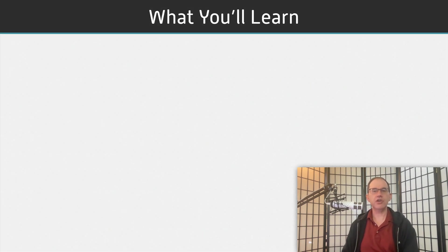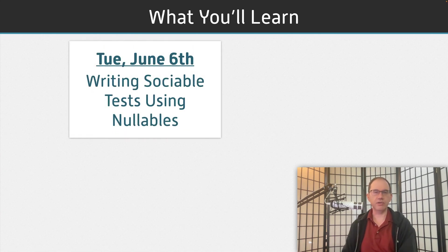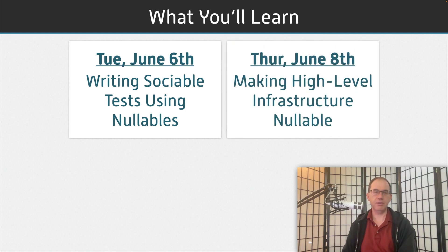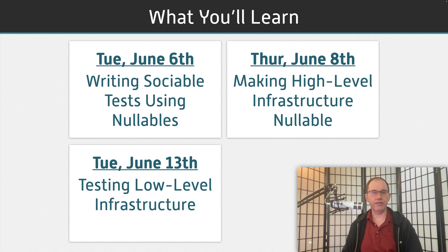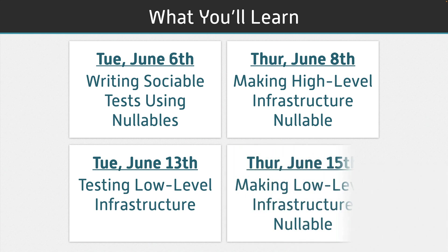In this course, you'll learn everything you need to know to start using these tests in your code. You'll learn how to use nullables as you test drive application-level code. You'll learn how to design and implement your own nullables as you write a high-level infrastructure wrapper for an external service. You'll learn how to write narrow integration tests as you implement a low-level HTTP infrastructure wrapper. And you'll learn how to make the low-level infrastructure wrappers nullable by using embedded stubs. Throughout it all, you'll be working hands-on with real-world code.